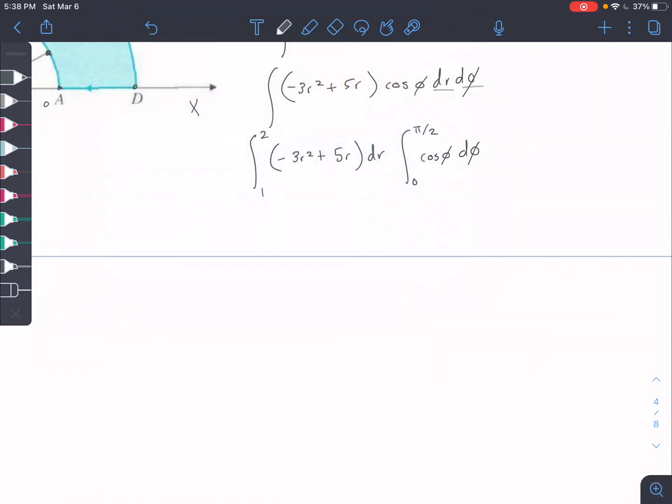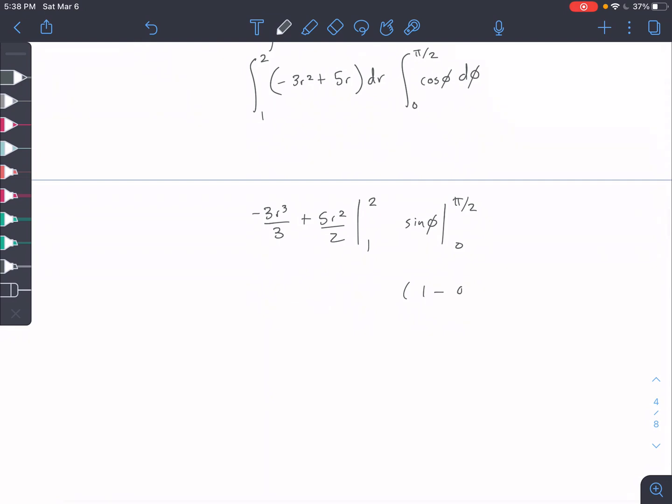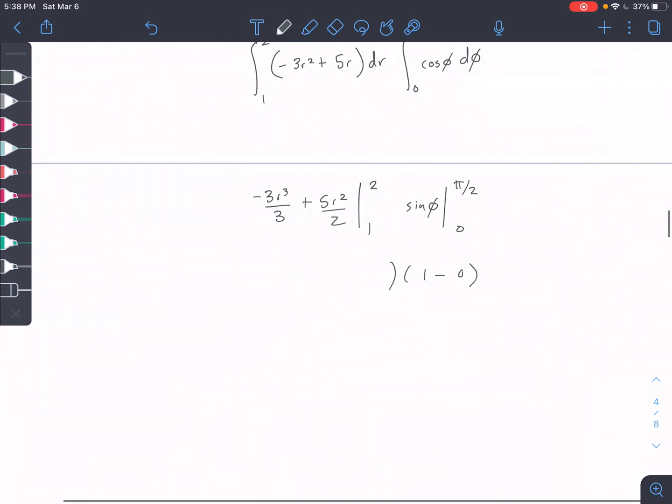Okay, so let's integrate and solve here. Minus 3r cubed over 3 plus 5r squared over 2 from 1 to 2, and then our cosine, the integral of that is just sine of phi. So pi over 2, 0, so it's just going to turn into 1 minus 0, so it'll be multiplied by 1 essentially.